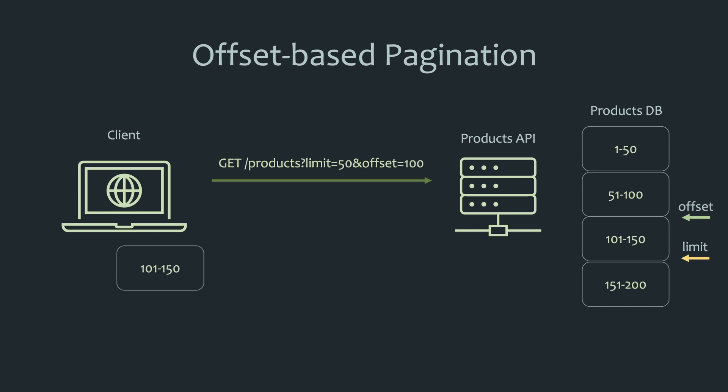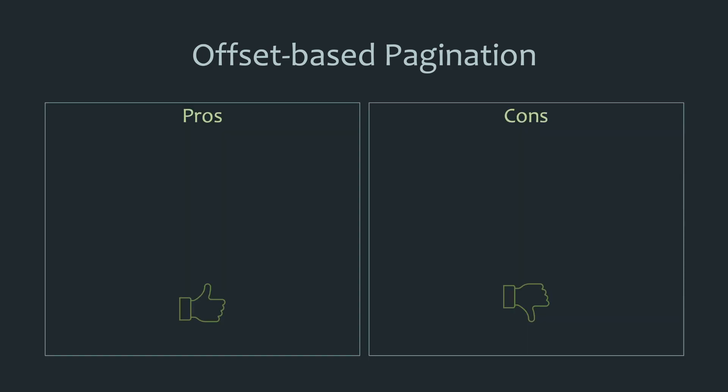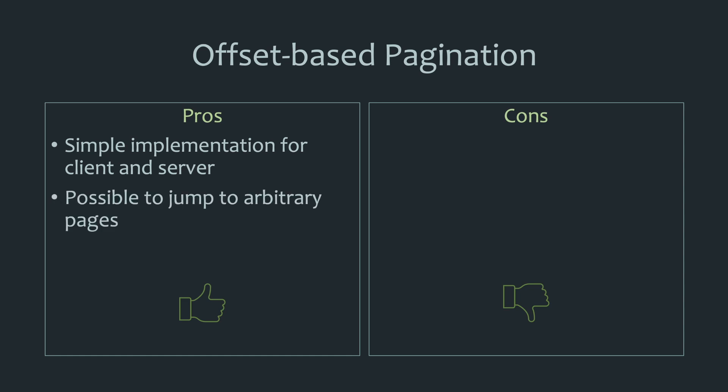And that's all there is to offset-based pagination — it's pretty simple. In terms of benefits, it's extremely simple to implement for both the client and the server. Users can also easily jump to arbitrary pages instead of being forced to scroll through each one. For example, if they wanted to skip to the sixth page from the first page, they can jump directly without having to go through pages two, three, four, and five.